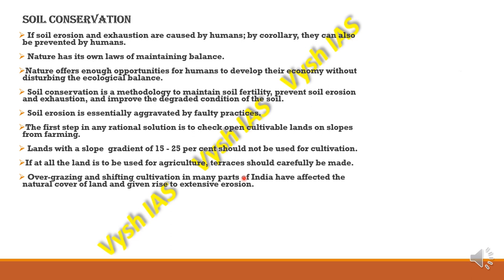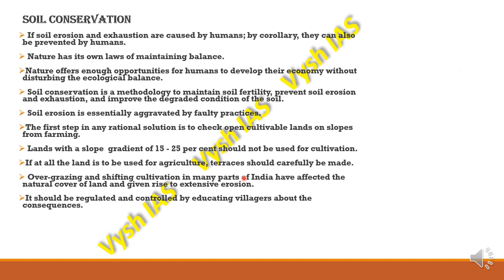When animals eat the grass layer, the soil in that area becomes weak because even grass roots hold the soil in place. Once grass is removed, wind, water, or rainfall can remove the soil. In shifting cultivation, burning and clearing of vegetation can cause a lot of damage to soil and kill the microorganisms and beneficial bacteria present in it. This should be regulated and controlled by educating villagers about the consequences of these practices.